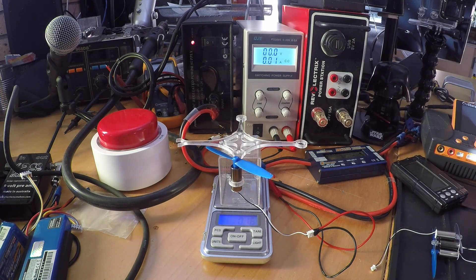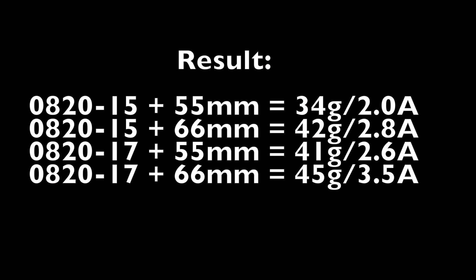To summarize, these motors need around 2 to 3.5 amps for full throttle. So, if you run them on a quad, you need between 8 and 14 amps out of the battery.